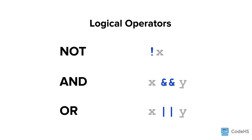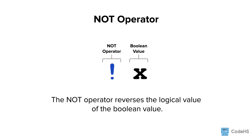In JavaScript, there are three logical operators: the not operator, the and operator, and the or operator. Let's take a look at the not operator. The not operator is denoted by an exclamation point and reverses the value of the Boolean expression.